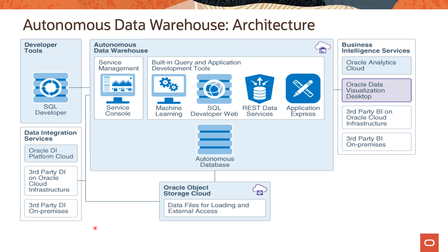Autonomous data warehouse also has data integration services support for Oracle Data Integrator platform cloud and third-party data integration services running on Oracle Cloud Infrastructure or on-premises. The service supports business intelligence tools including Oracle Analytics Cloud, Oracle Data Cloud, Oracle Data Visualization Desktop, and any third-party business intelligence tools running on cloud infrastructure or on-premises.